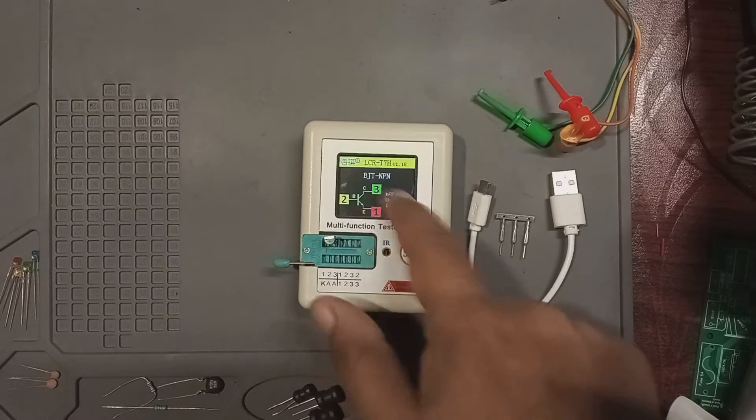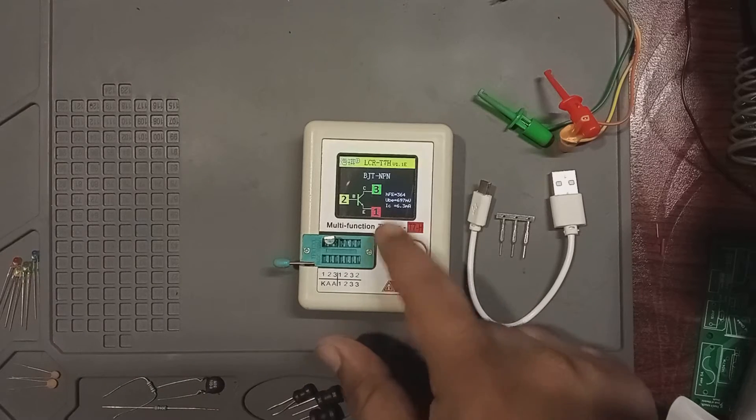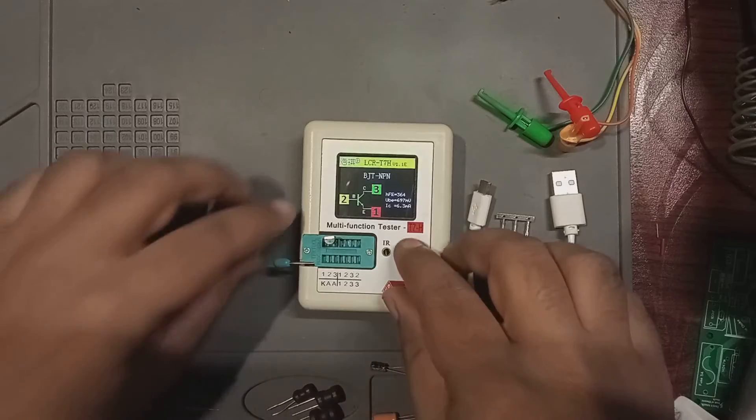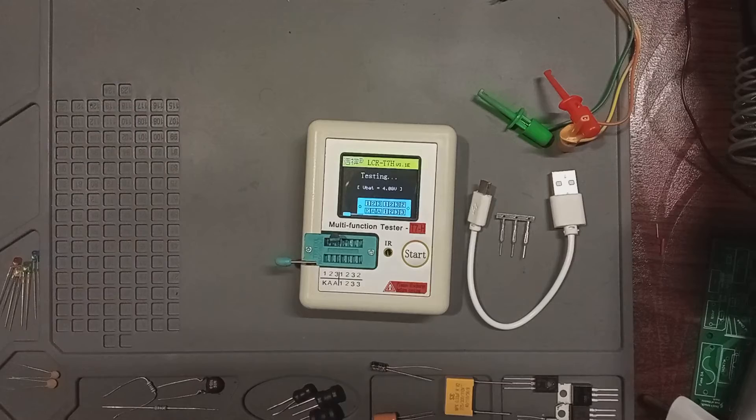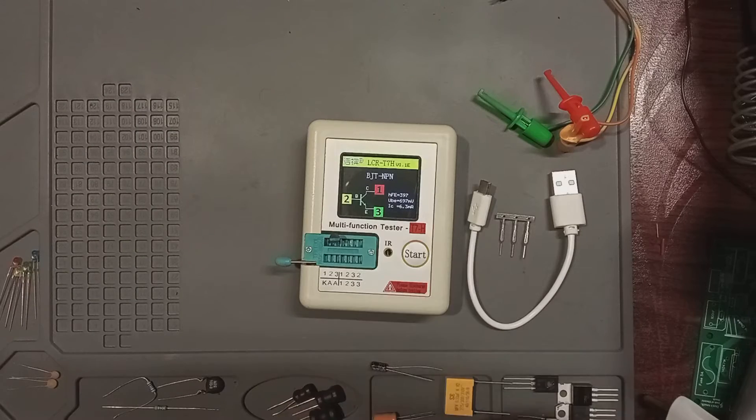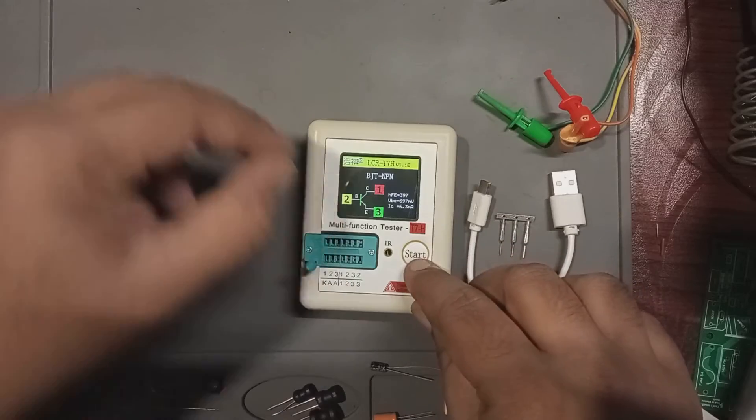However, the pin indications change. Pin 1 becomes the emitter and pin 3 is the collector. Switch it back and they flip. As you can see, the pin 3 becomes the emitter and pin 1 becomes the collector here.